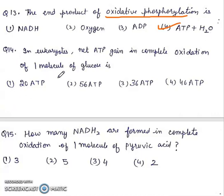Question 14: In eukaryotes, net ATP gained in complete oxidation of one molecule of glucose is 20 ATP, 56 ATP, 36 ATP, or 46 ATP? Right answer will be third, 36 ATP.